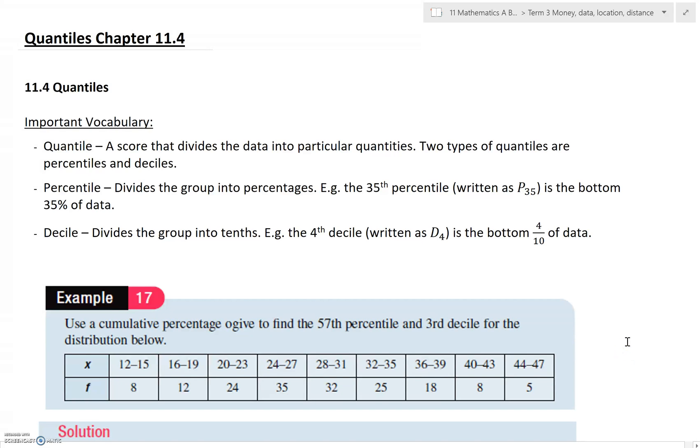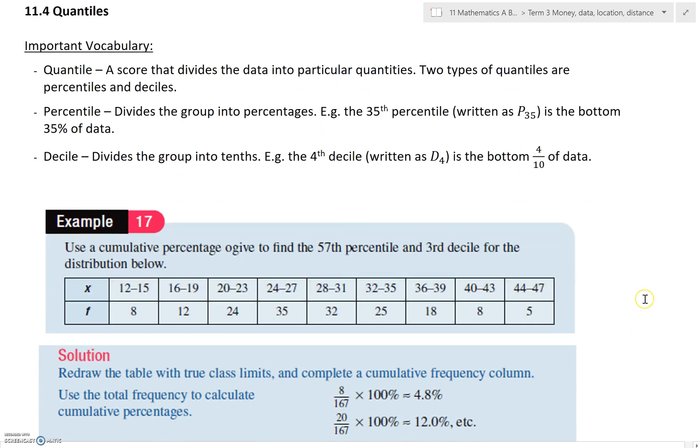Okay everyone, welcome back. So the last topic that we're talking about in this unit in chapter 11 is a topic called quantiles. Now a quantile is just a score that divides the data into particular quantities and they can be different ones. And two we're going to look at are percentiles and deciles. Deciles is what it's usually called. So what does that mean?